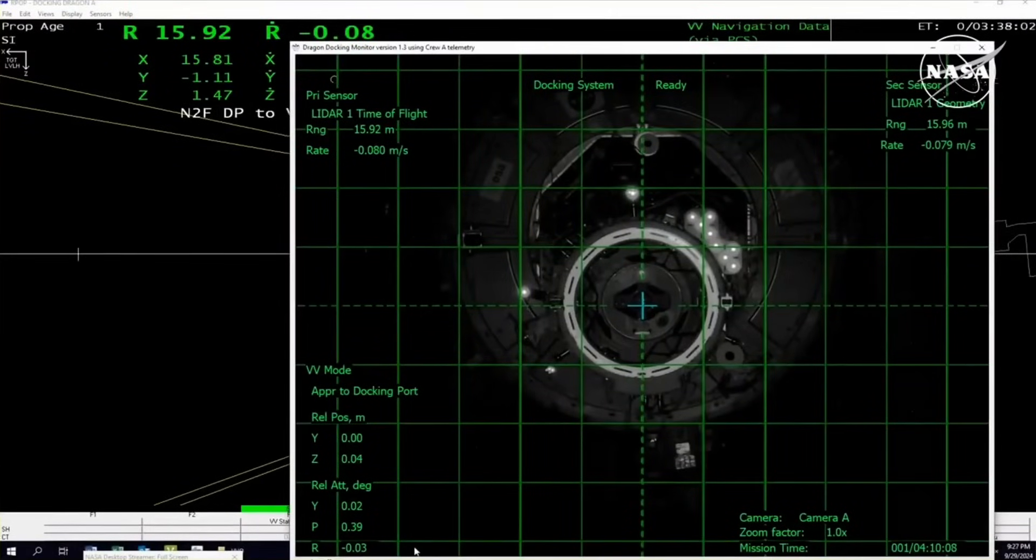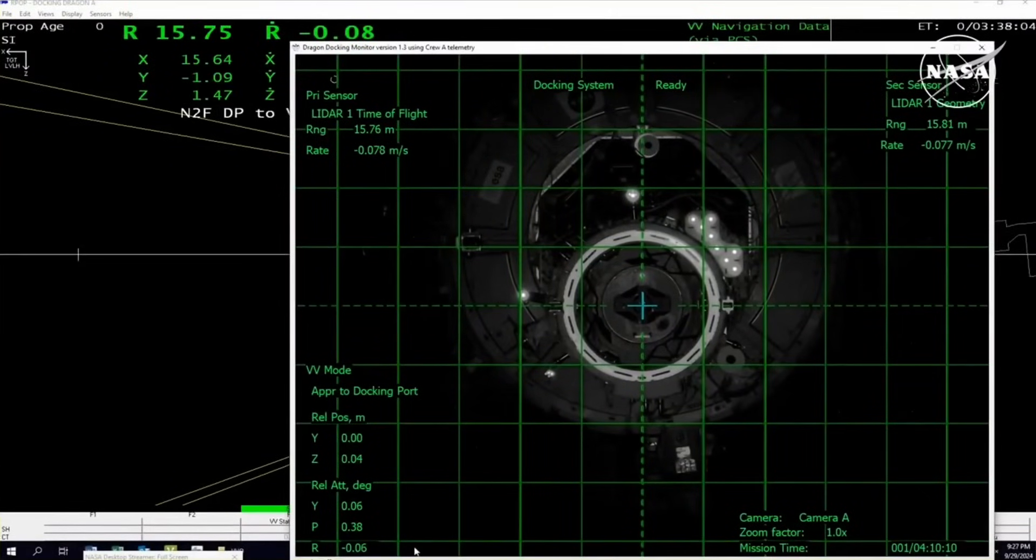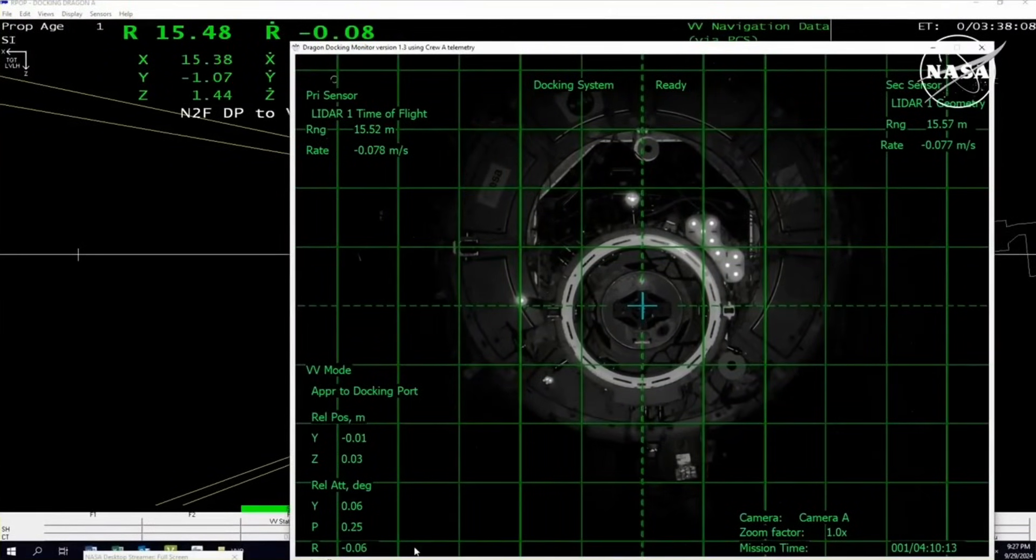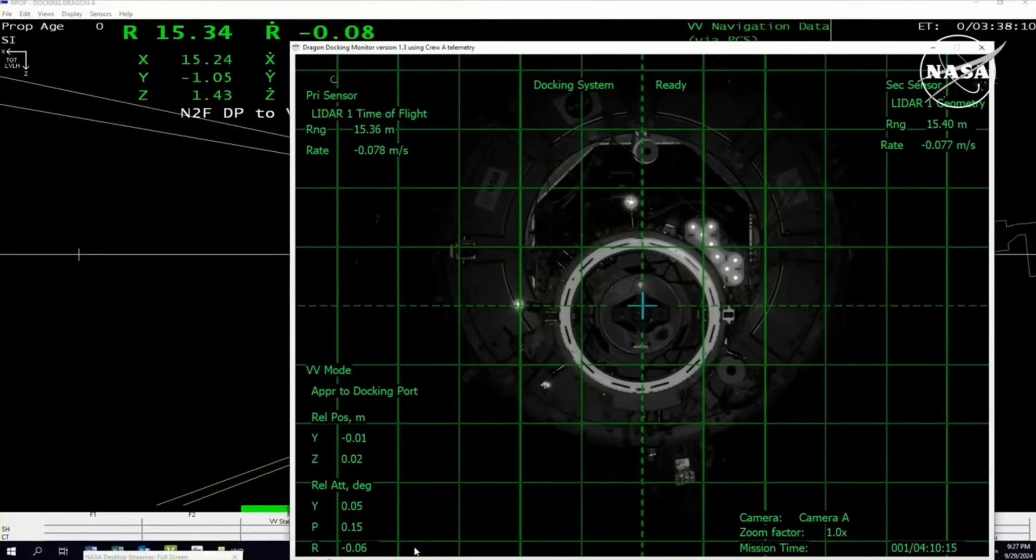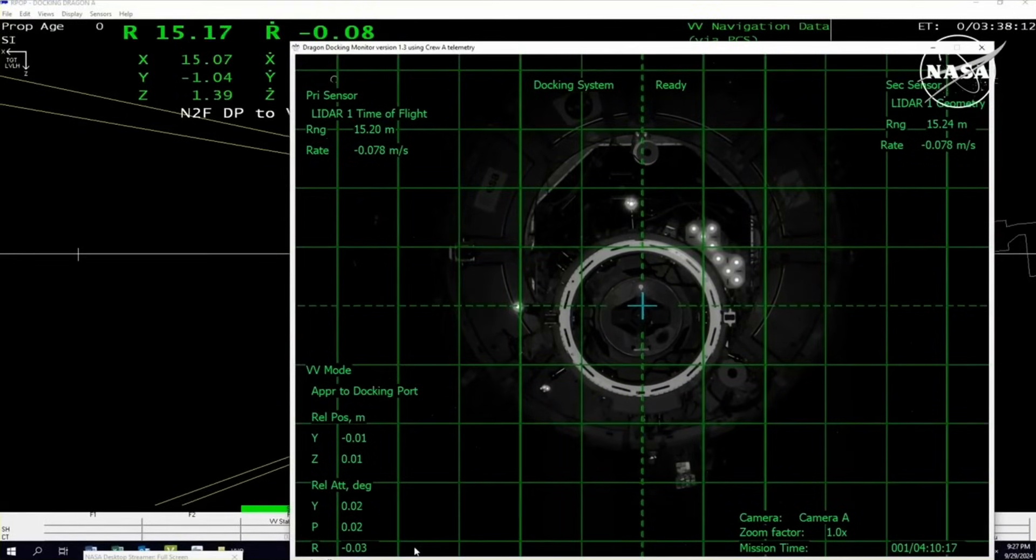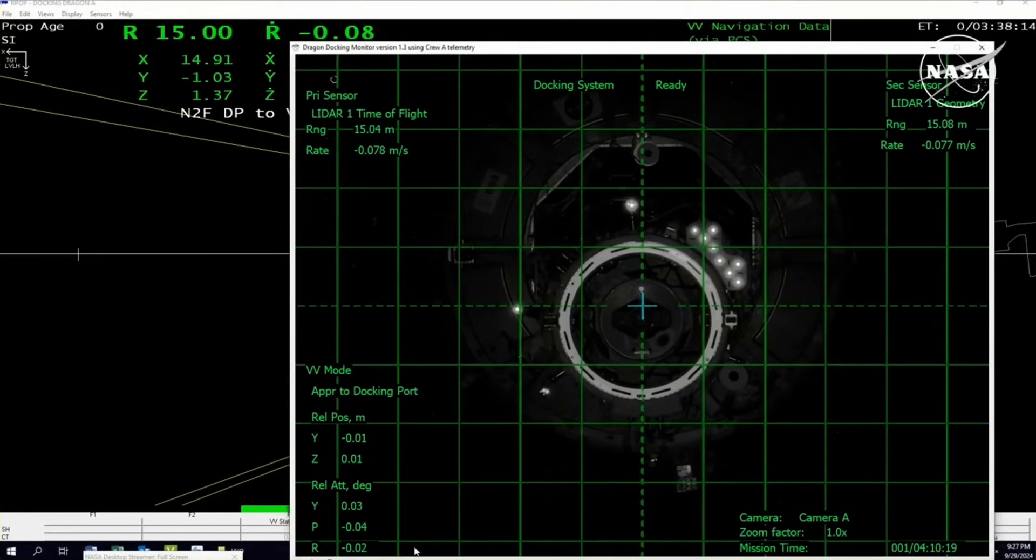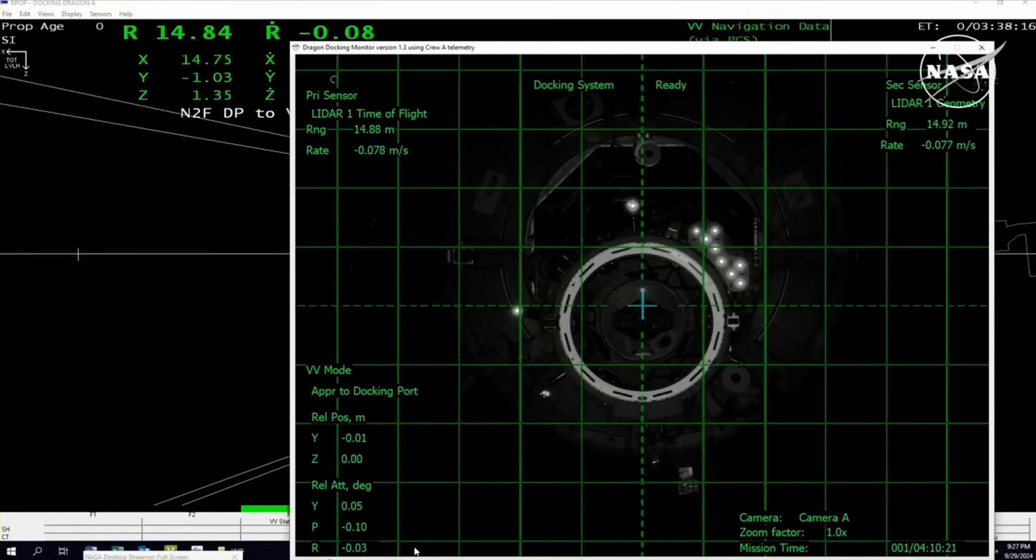We do expect to be in an orbital nighttime during docking, but this is a pretty cool view as you can see a camera coming from Dragon and focusing on the docking port itself. So it looks like we are properly aligned with that node to forward port as we continue to approach now just 15 meters away.